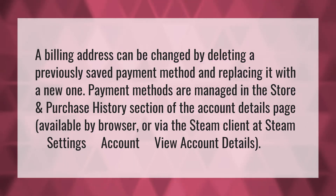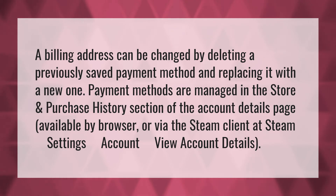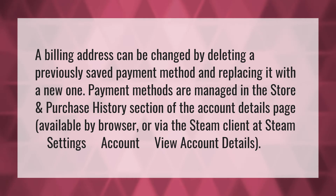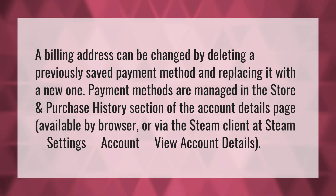A billing address can be changed by deleting a previously saved payment method and replacing it with a new one. Payment methods are managed in the Store and Purchase History section of the Account Details page, available by browser or via the Steam client at Steam > Settings > Account > View Account Details.